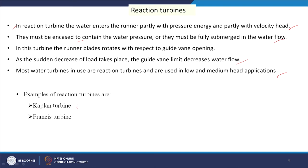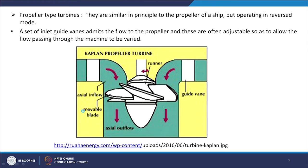Examples of reaction turbines are the Kaplan and Francis turbines. Kaplan turbines are propeller-type, similar in principle to a ship's propeller but operating in reversed mode. Guide vanes admit flow to the propeller and are often adjustable to vary the flow passing through the machine.